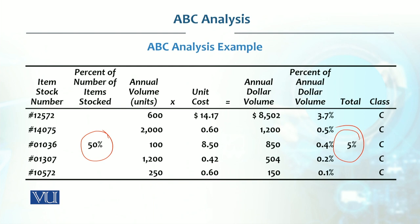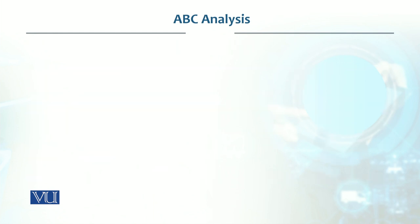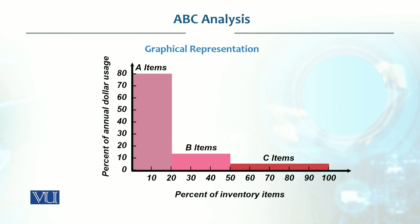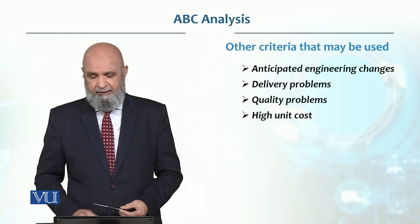Since C-category items are not value-critical, we can keep them in inventory for 6 months without tight monitoring. In the graphical representation, you have A-category items, then B items, then C items, which are very low in value but represent a very large number — 50 percent of inventory units.